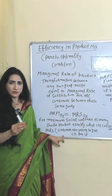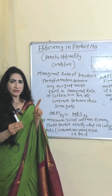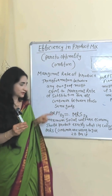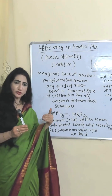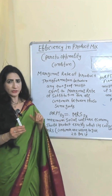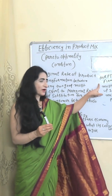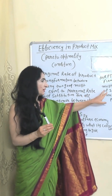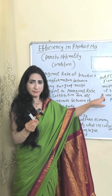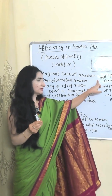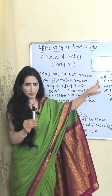For example, if consumers are willing to give up two burgers for one pizza, it will be called the marginal rate of substitution. The firm should produce according to this — that means the firm must give up two burgers in order to produce one pizza, which is called the marginal rate of product transformation.